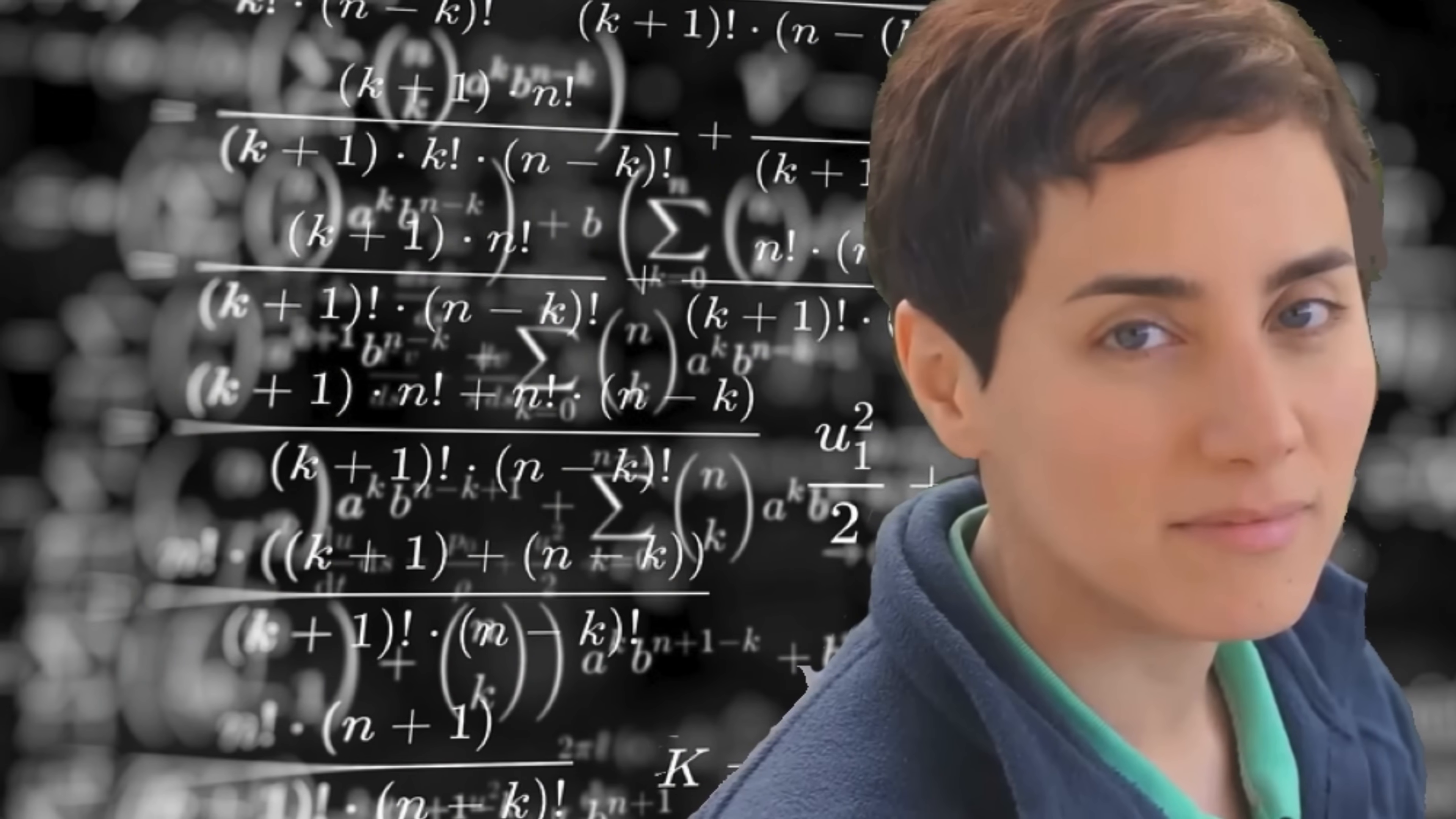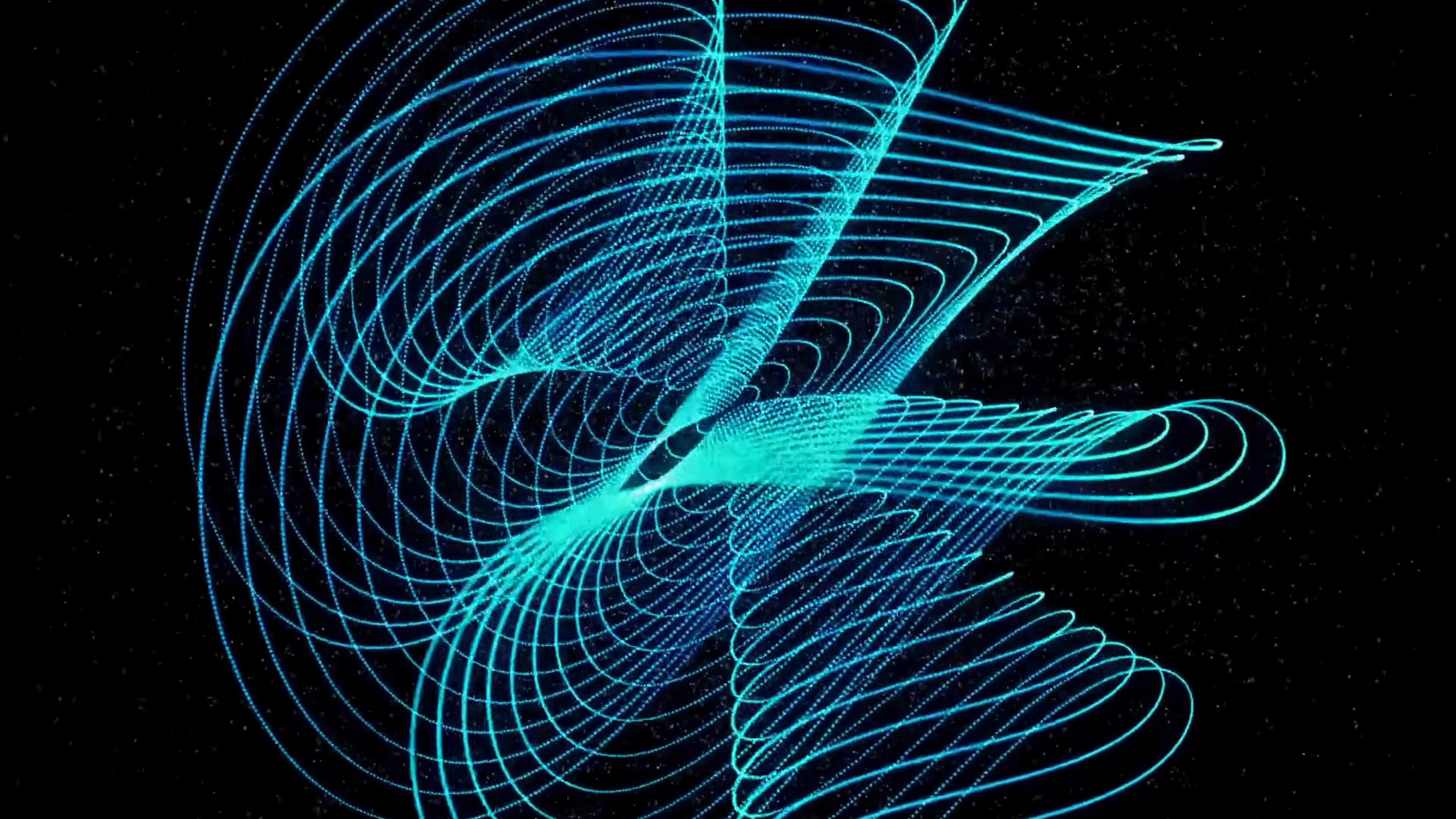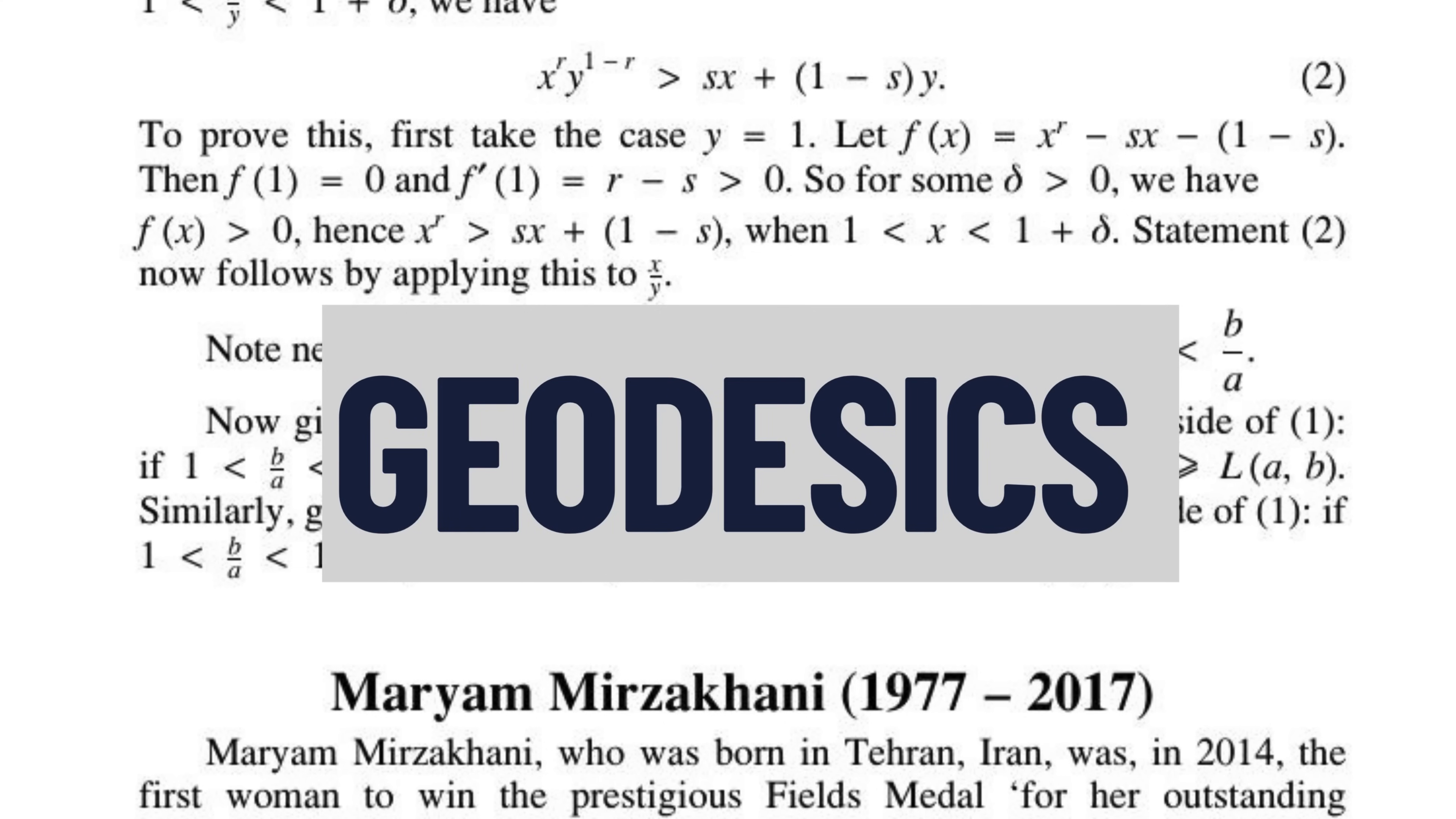Mirzakhani's mathematical genius lay primarily in her groundbreaking exploration of hyperbolic geometry, an area concerned with surfaces that curve in ways dramatically different from flat or spherical spaces we experience daily. Her landmark doctoral thesis developed novel methods for precisely counting and categorizing the closed loops, known as geodesics, that traverse these complex surfaces. This intricate counting created connections between geometry, algebra and dynamics, illuminating previously obscured relationships within mathematics.